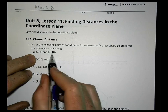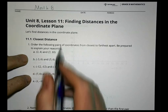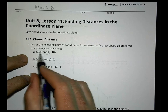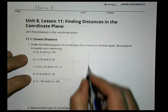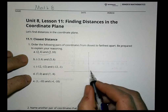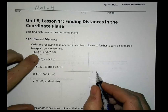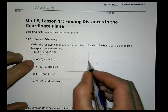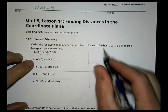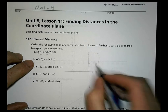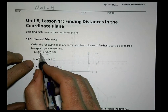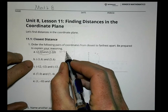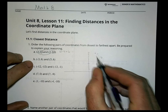We have the pair (2,4) and (2,10). What I notice is they share the same x-value, which means they're both on the line x = 2. So the distance has nothing to do with the x-value — it's all about how far apart the two y-values are: 10 and 4. We can do 10 minus 4, and the distance is 6.